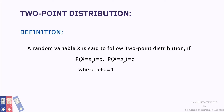A random variable X is said to follow a two-point distribution if the probability mass function is given by: probability X equal to X1 (first point) is P, and probability X equal to X2 (second point) is Q, such that P plus Q equals 1. This means the whole probability is distributed on only two points X1 and X2.